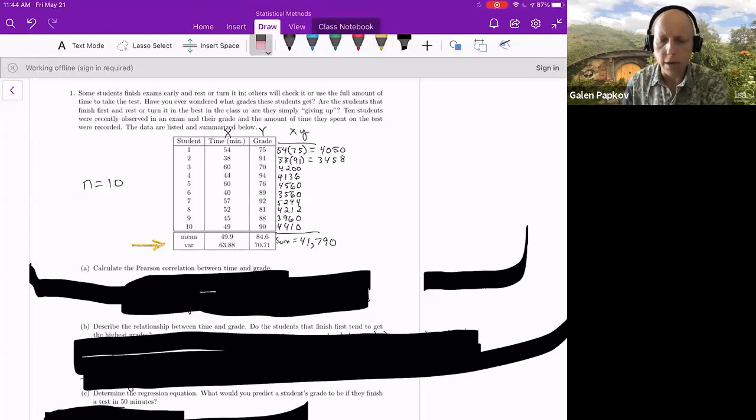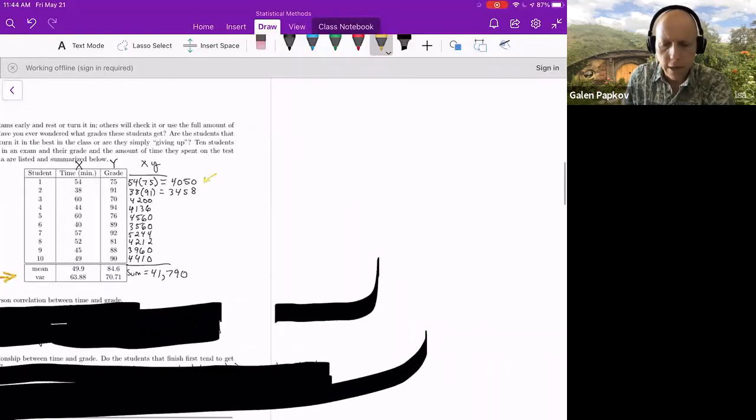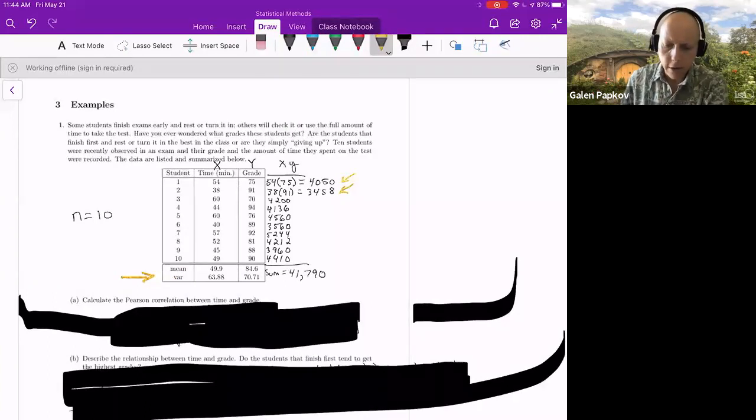I described that earlier as multiplying row by row. So the first row would be 54 times 75, and that gives 4,050. The second row is 38 times 91, which gives 3,458. And if you continue on, you should get the rest of those values that I've got there. And we want to add those up. And so when you add up the sum of those products, you've got this fairly big number of 41,790. And that goes in the top left part of that formula.